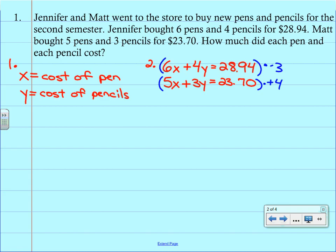So when we distribute that through, we have to write a new system. So we end up with negative 18X minus 12Y equals negative 86.82. By the way, these are definitely calculator problems with all these bigger numbers and decimals. The second equation, when we distribute the 4, we're going to get 20X plus 12Y equals 94.80.